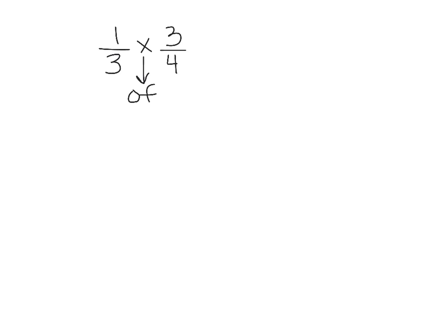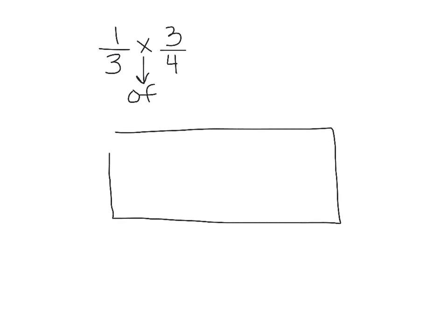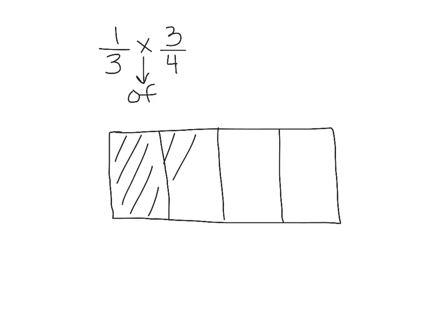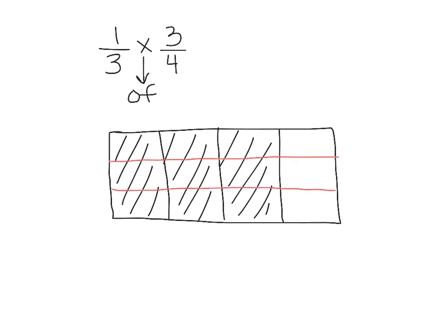To draw our model, we're going to start by drawing ourselves a rectangle. We're going to look at our second fraction, which is three fourths, and split our rectangle into four equal pieces. Since our fraction is three fourths, we're going to shade in three fourths. Now switching to the other color for our first fraction, one third — since our denominator is three, we split the model into three equal pieces in the opposite direction. Our numerator tells us we are shading in one of those three pieces.